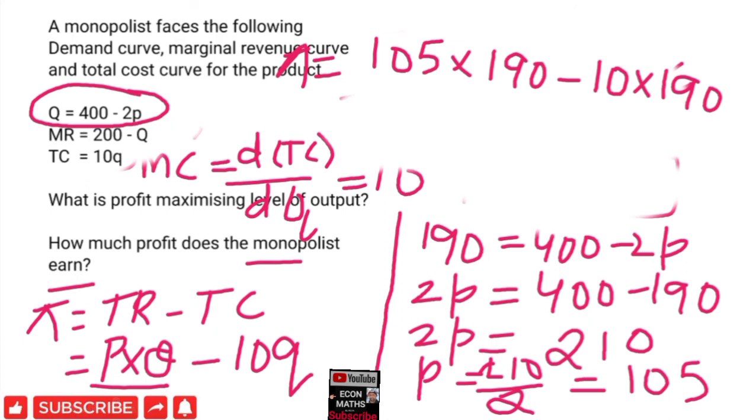So profit equals 105 × 190 - 10 × 190. Whatever value we get here would be the profit earned by the monopolist. You can calculate this by yourself. Thank you.